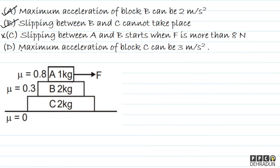Now option D: maximum acceleration of block C can be 3 m/s². This is clearly wrong. Even if we increase F greatly, A and B will slip, and only kinetic friction (8 N) will act on B from A. With 8 N acting forward on the B+C system (mass = 4 kg), their common acceleration remains 2 m/s². So the maximum acceleration of block C is only 2 m/s², not 3 m/s².